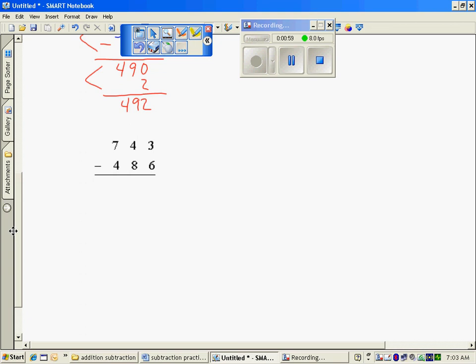The last problem, 700 minus 400 is 300. 40 minus 80, I can't take 80 from 40, so if I had $40 and I spent 80, I would go in the hole, so it would be negative $40.